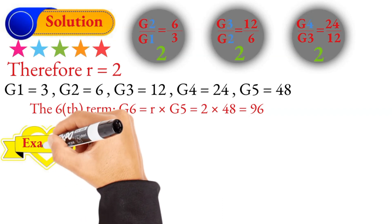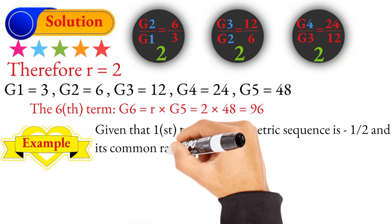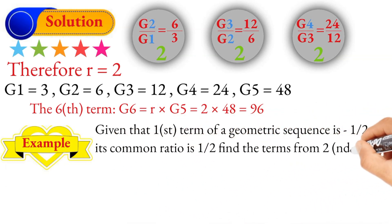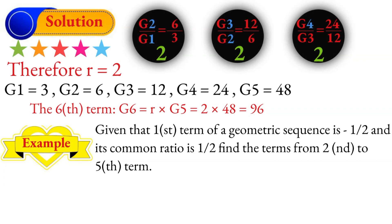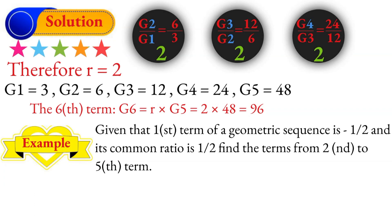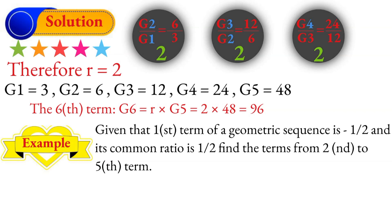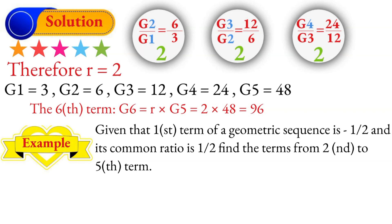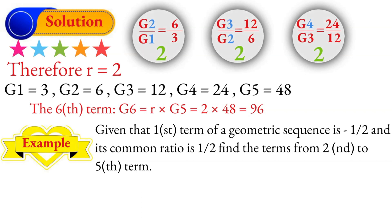Second example: given the first term of the geometric sequence G1 is negative 1 over 2, and the common ratio R is 1 over 2, find the second and fifth terms. G2 equals R times G1.